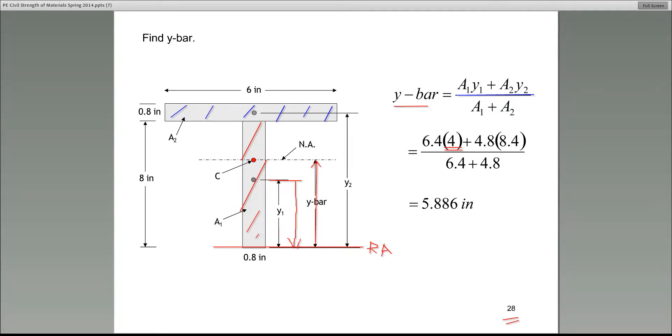In this case, it's 4. Then the second part is A2 times Y2. A2 is 4.8. What about Y2? Guys, this is where you really need to pay very close attention to. Y2 is the distance between the centroid of area 2 measured from the reference axis. In this case, it's 8.4. All right. Good.